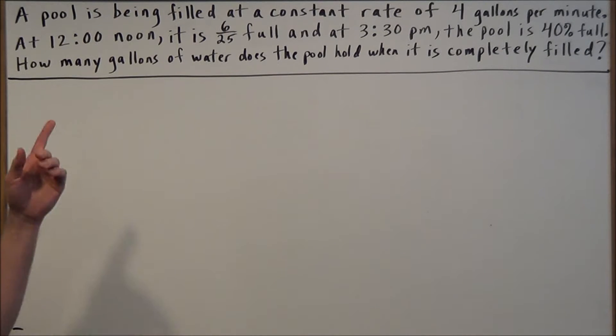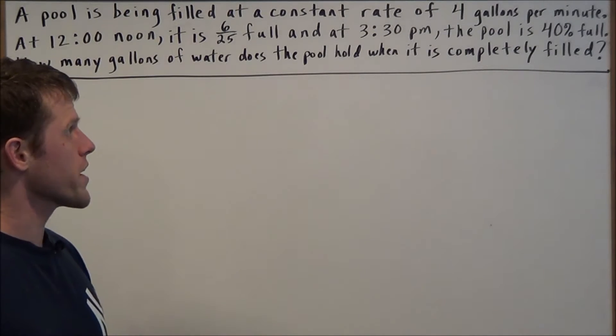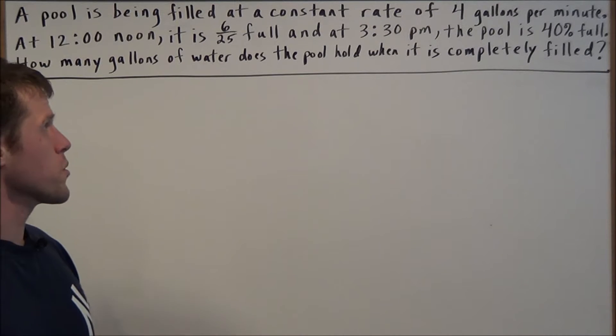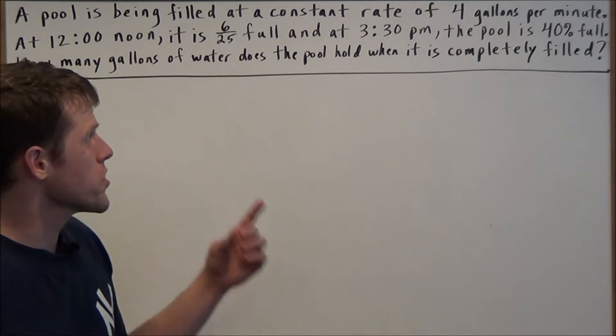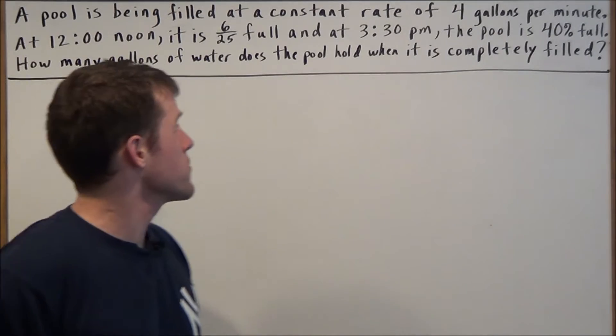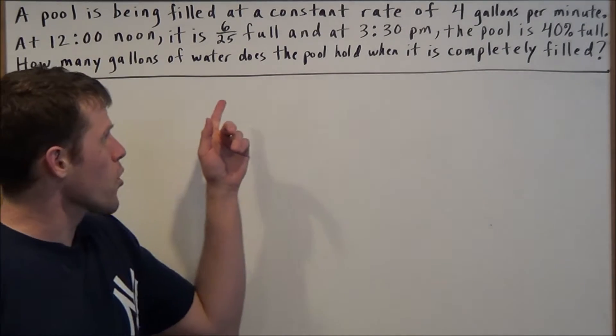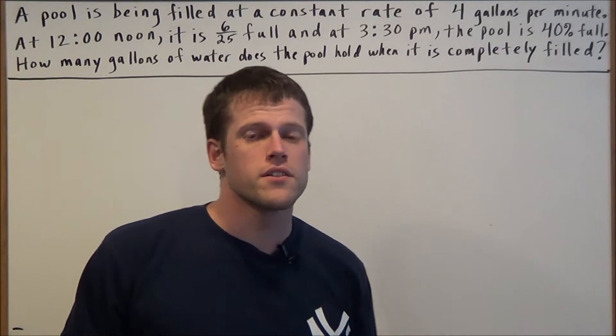We have a pool being filled at a constant rate of 4 gallons per minute. At 12 noon it is 6/25 full, and at 3:30 pm the pool is 40% full. How many gallons of water does the pool hold when it is completely filled?